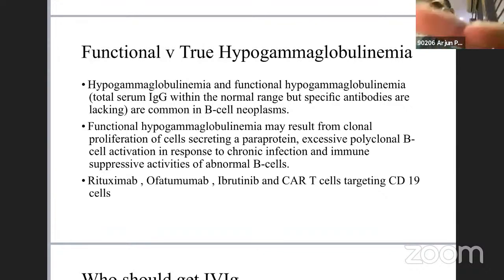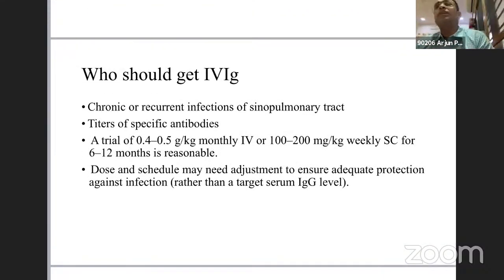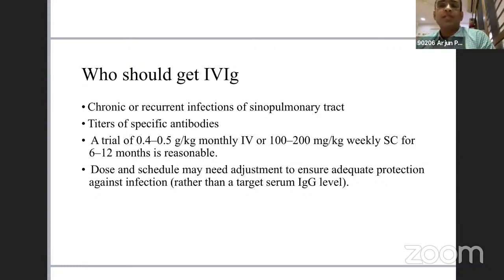The important question is: which patients should receive IV immunoglobulins? Simply having hypogammaglobulinemia is not sufficient. You must demonstrate that the patient has chronic or recurrent infections, especially of the sinopulmonary tract. Patients should have demonstrable symptoms due to their deficiency before you set out to correct hypogammaglobulinemia.